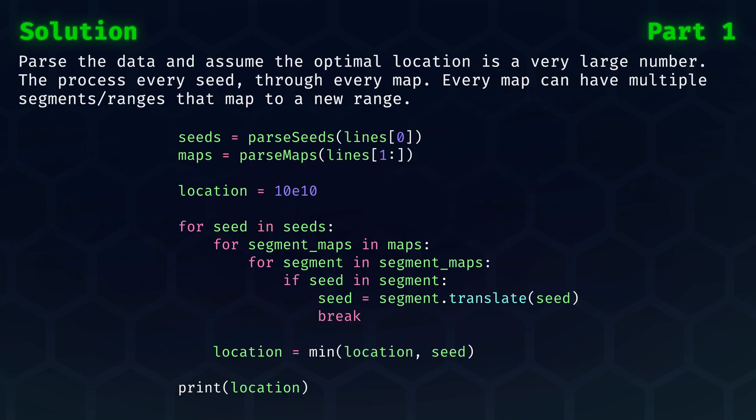For the outline of the solution, we start with parsing the seeds and the maps from the instructions. Then we process every seed and push them through every map. Note that every map can have multiple segments that map to a new range, as we have just seen in the examples.